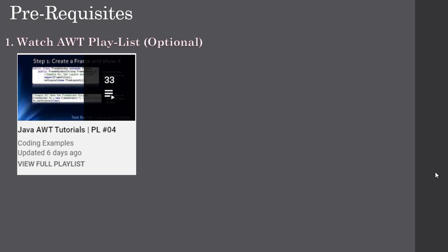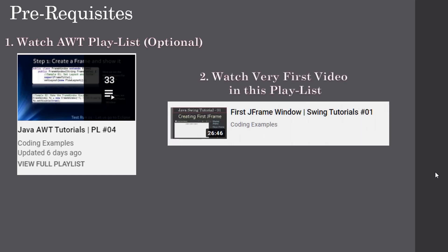This is optional, but if you want you can watch the AWT playlist first — going through those videos makes the Swing tutorial easier. The very first video of this series shows how to create a JFrame window. In this video we are not going to focus on JFrame window creation; we will use the JFrame window created in that first tutorial and on top of it we will add the radio button and demo how JRadioButton works.